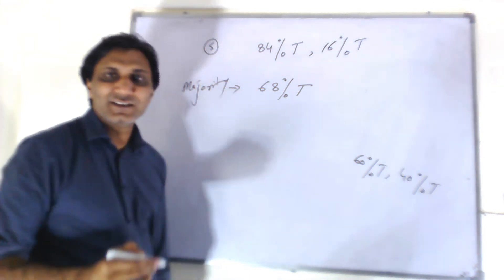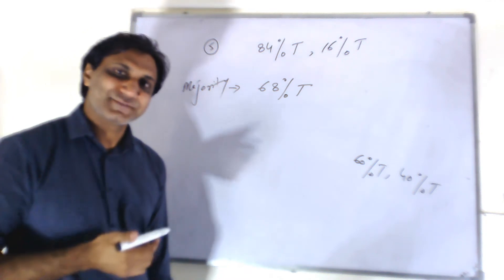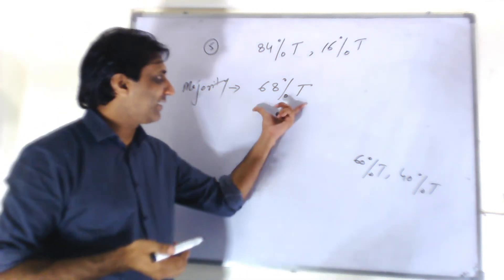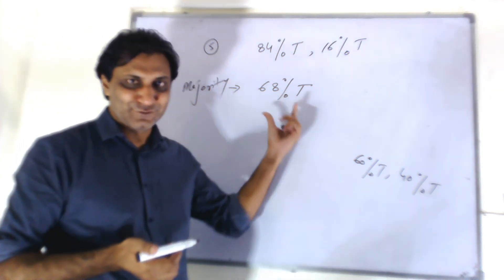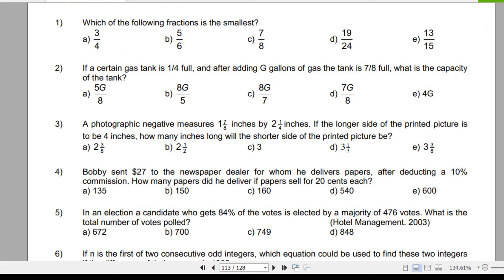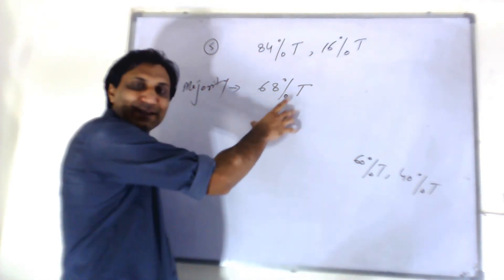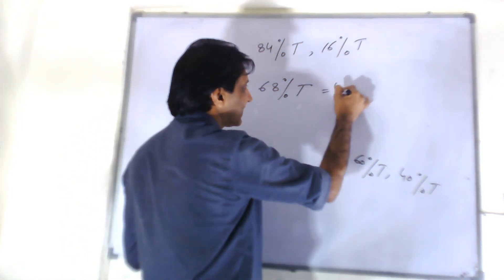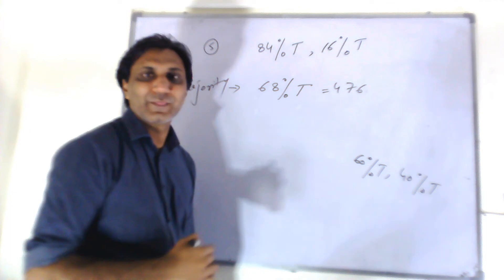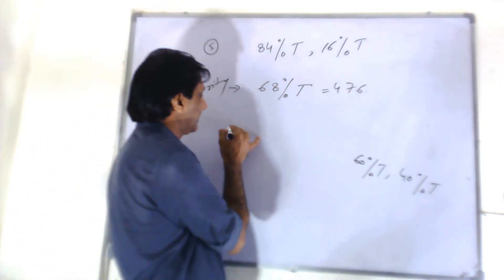Majority votes or marginal votes, whatever you call it, the difference. You won it by 68% of the total votes. And you won it by how many? This margin is elected by a majority of 476. This difference is equal to 476. What was the total number of votes? T, you need to find out.